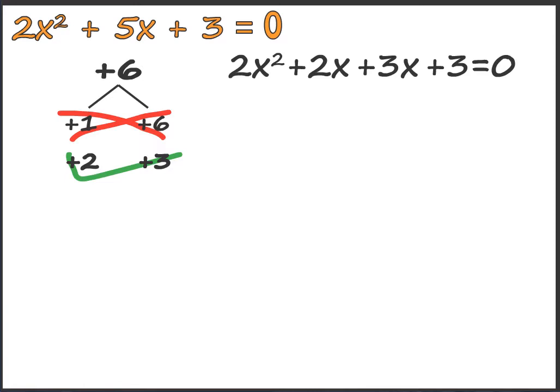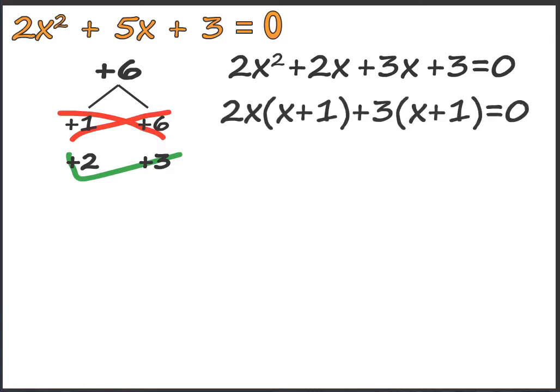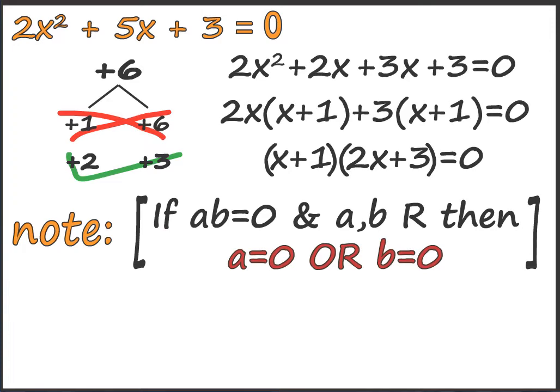Therefore 2x squared plus 2x plus 3x plus 3 equals 0. Taking x plus 1 common, we get 2x into x plus 1, plus 3 into x plus 1 equals 0. Therefore x plus 1 into 2x plus 3 equals 0.